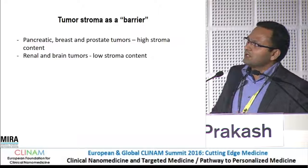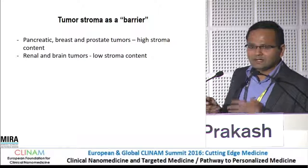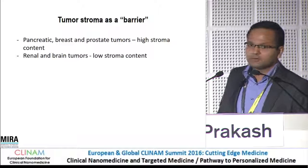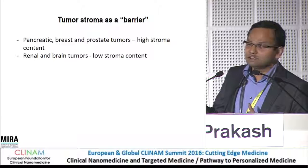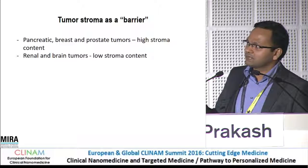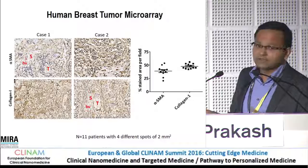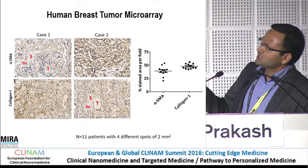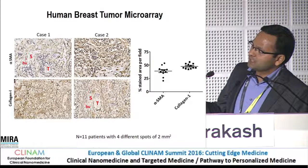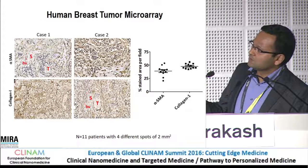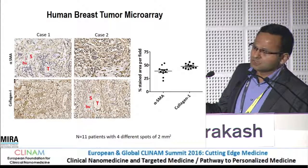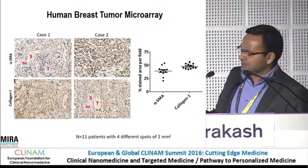What I'm covering here is a bit about stroma as a barrier and as a target. Looking at tumors, pancreatic, breast, and prostate tumors have high stroma content, while renal tumors and brain tumors contain very little — the brain has almost no stroma, meaning fibroblasts. We studied breast tumor microarrays and looked at alpha-smooth muscle actin, a marker for fibroblasts, and collagen, the extracellular matrix. About 40–50% of these stainings are positive, so stroma can vary from patient to patient but is abundant in breast cancer.